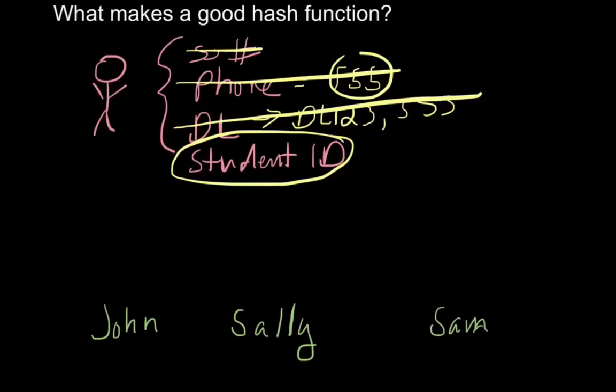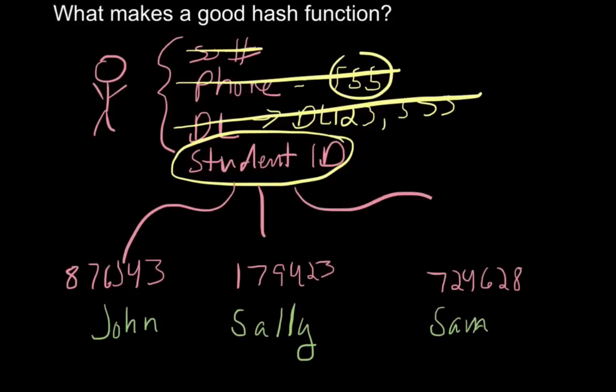What I mean by that is, say we have three students here - John, Sally, and Sam. They each have a corresponding ID, and that corresponding ID is all going to be the same format. So the ID may be - let's say a six digit number - so we can say 887665, I'll go 179423, and then we'll go 724628.